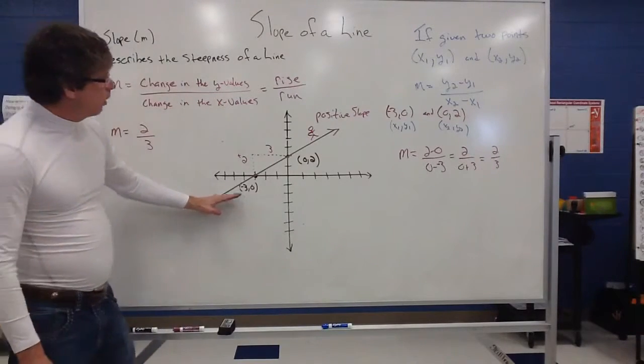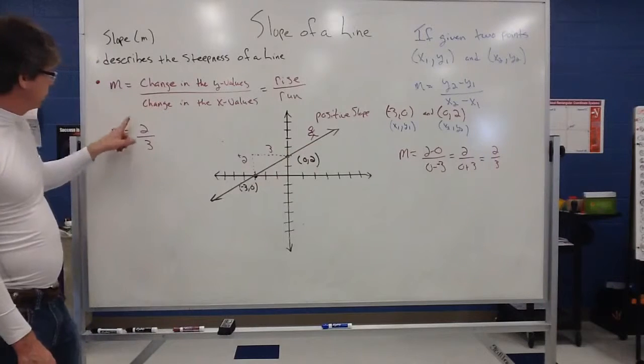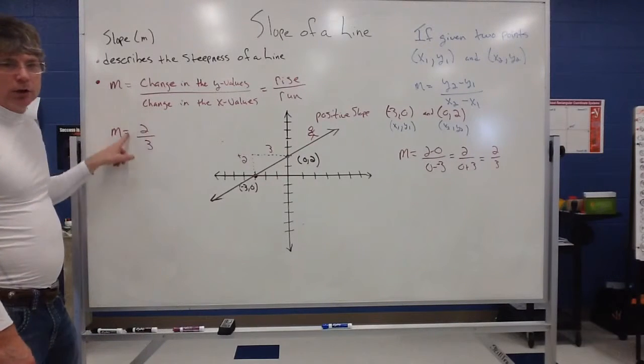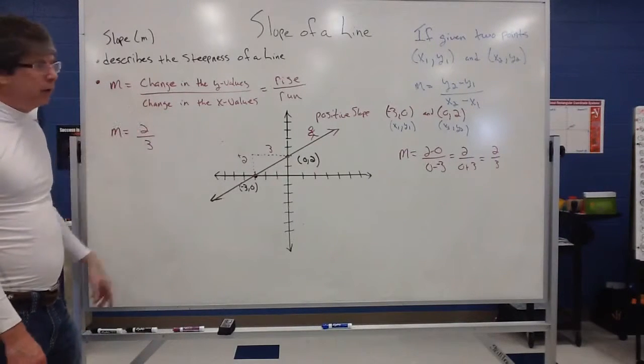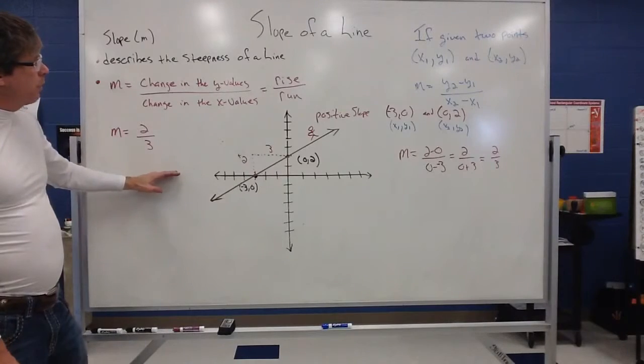So, this line would have what we call a positive slope, and it would be, because notice the number is a positive number. Two-thirds is actually a positive value. Let's see what else we can come up with. Stay tuned.